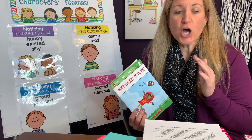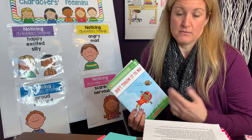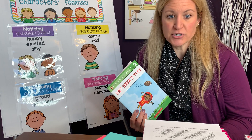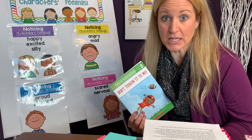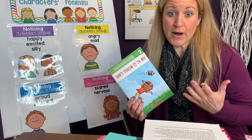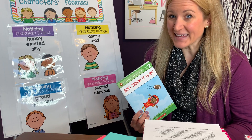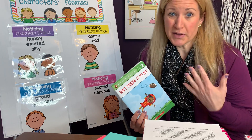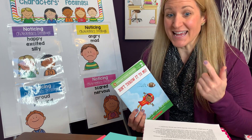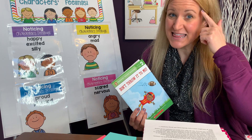We know how a character is feeling in a couple of different ways. We know how a character is feeling because the author tells us. We also know how the character is feeling by paying attention to what the character is doing, what the character is saying, or what the character is thinking.